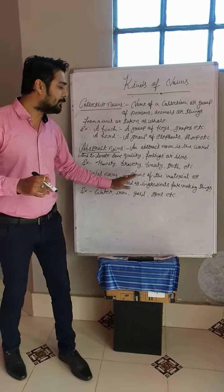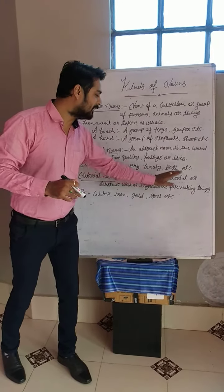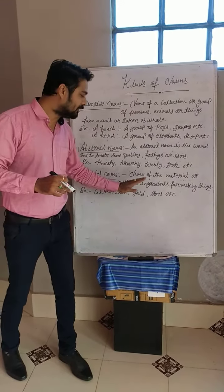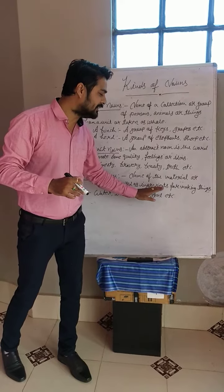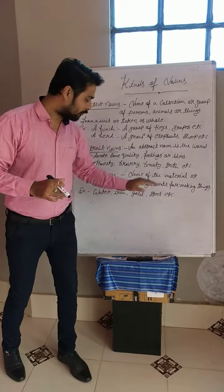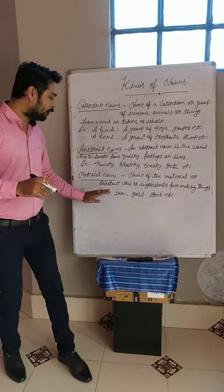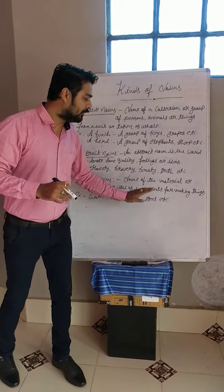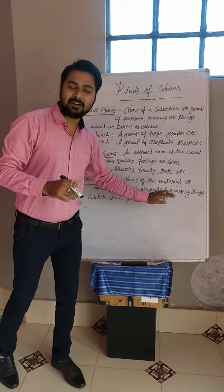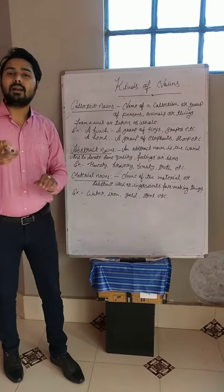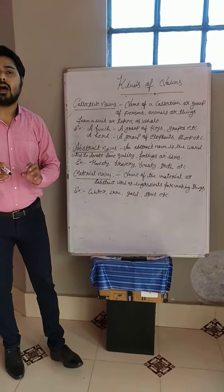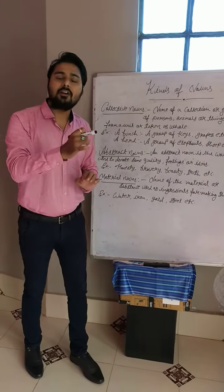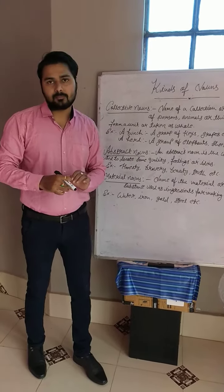Material nouns. Name of the material or substance used as ingredients for making things. For example, water, iron, gold, steel, etc. Or we can say, material nouns are generally uncountable.